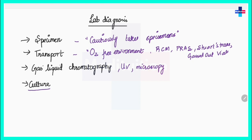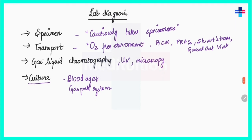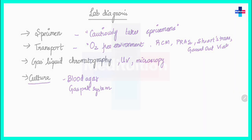For culture, several special media can be used for anaerobes, such as blood agar with neomycin, yeast extract, and hemin-vitamin K. We can also use a Gas-Pak system, which provides a convenient method for routine anaerobic cultures. With this we have concluded this chapter.